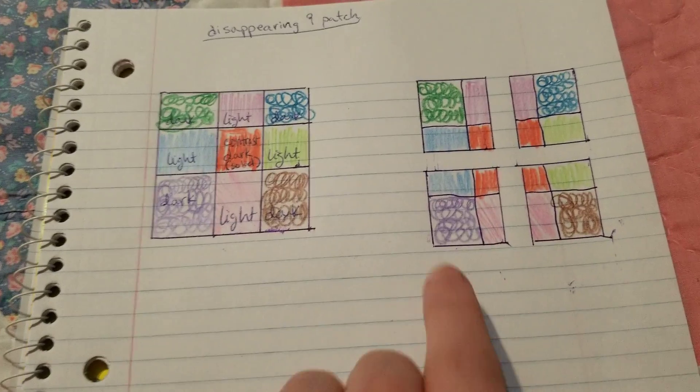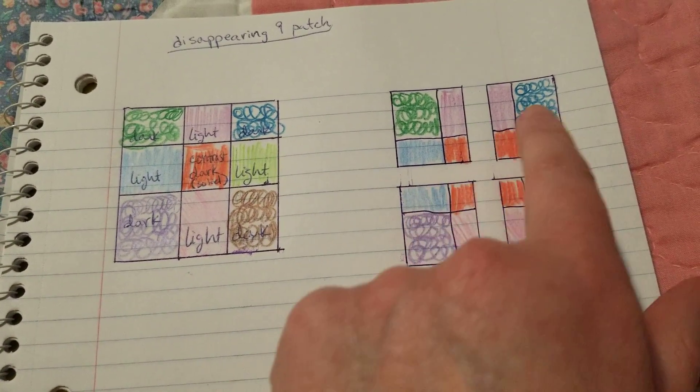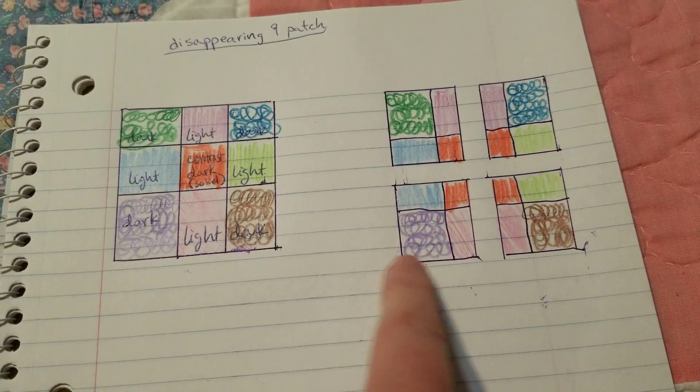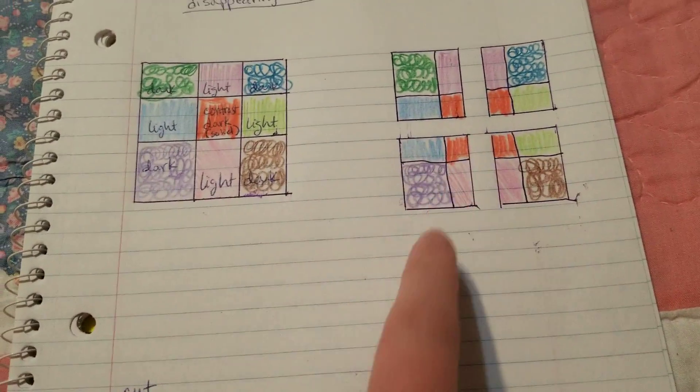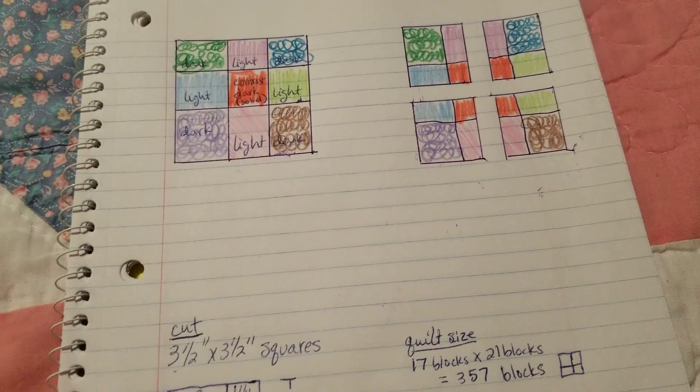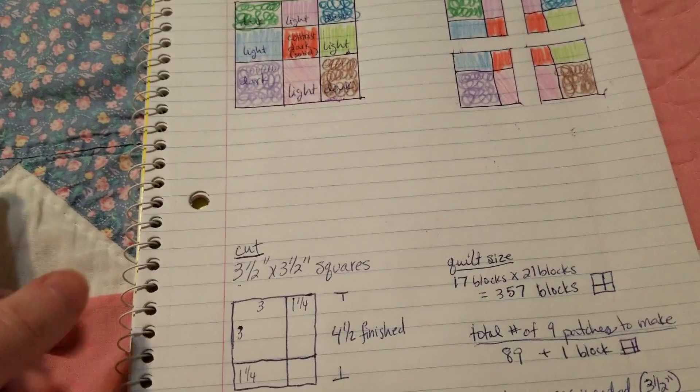You sewed together nine pieces but ended up with something more complicated. I think the pattern I'm going to do is take two opposite corners and rotate them 90 degrees, but once I start making a bunch of these and lay them out, I might decide to do a different configuration.